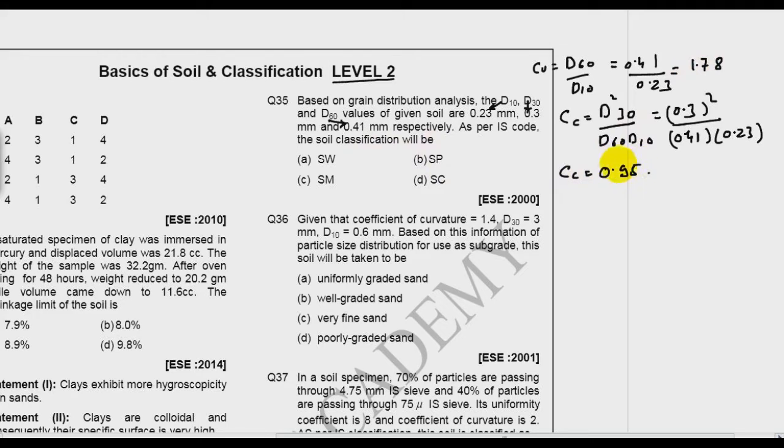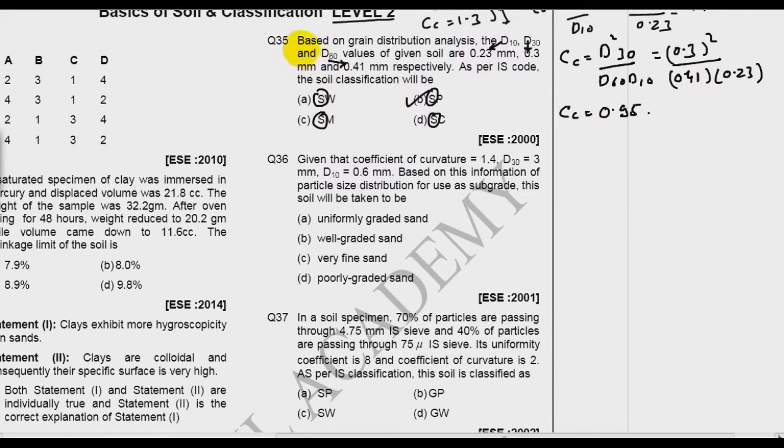Now you have to consider the second part because first in all the options you see there is S. So you have to consider only the second part. We know Cu should be greater than 6 and Cc should lie between 1 to 3 for soil to be well graded. And if any one of these conditions is not satisfied, then the soil becomes poorly graded. So what is my answer? Since Cu is less than 6, it becomes SP. So what is my answer? It is B. It is a standard question. Many times these type of questions have been asked.